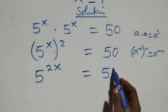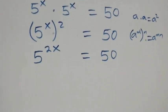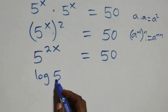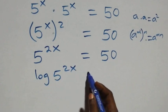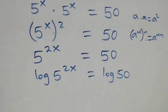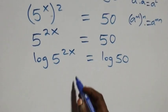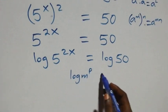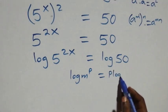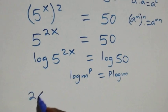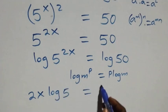The next step: we take the log on both sides, that is log of 5 raised to power 2x equals log 50. We apply the power rule of logarithms — when we have log m raised to power p, this is the same as p·log m — so this becomes 2x·log 5 equals log 50.